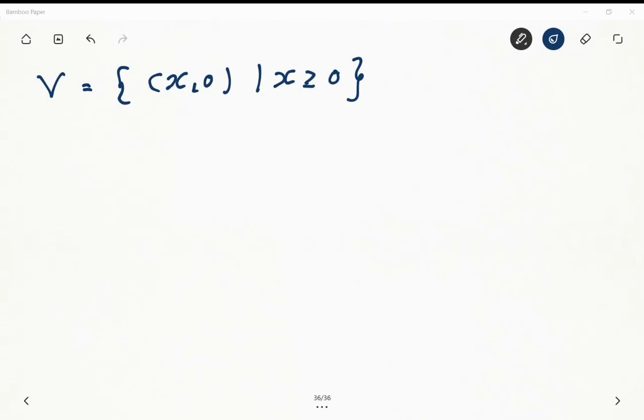So here we got this set of tuples that have this form (x,0) where x is a real number greater than or equal to zero. So we need to show if it is or is not a vector space.